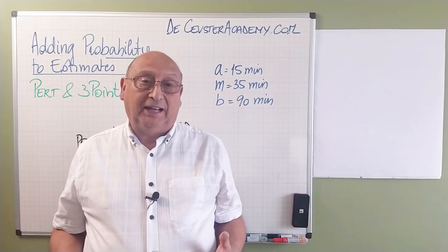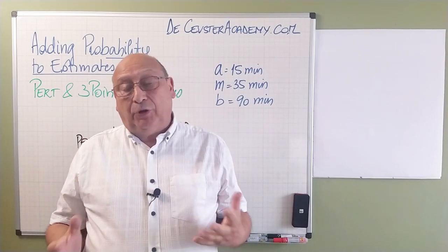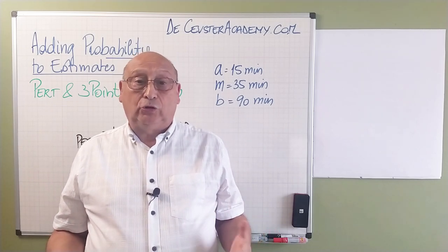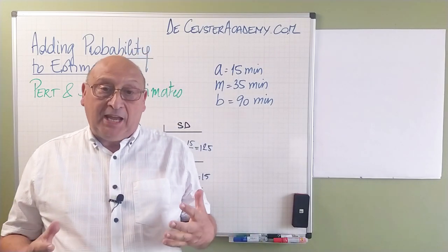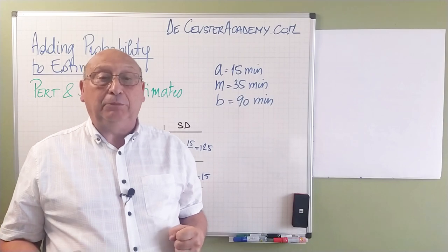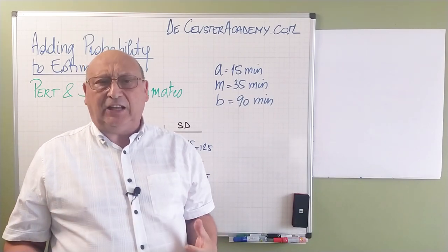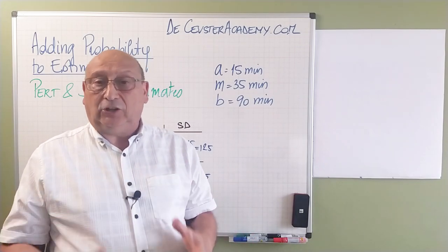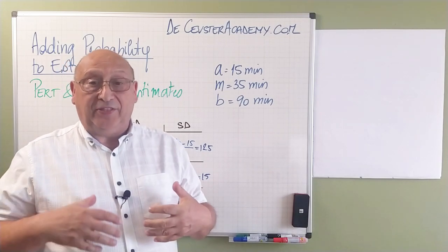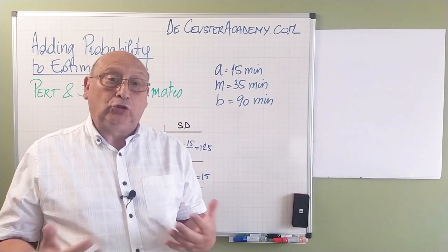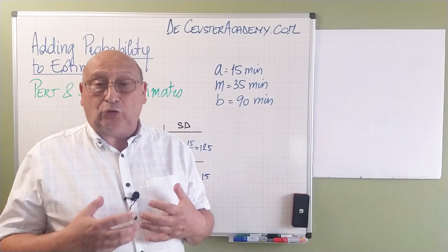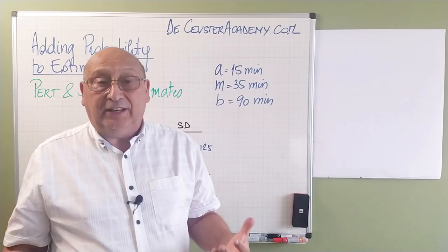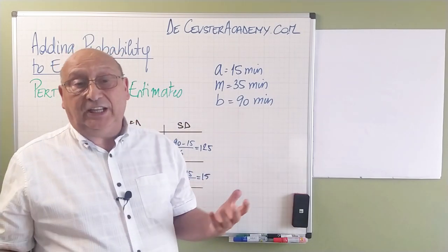Using the PERT and the three-point formulas is not difficult — they are simple calculations — but we have to determine the values A, M, and B. In our example, I've taken a trip of 15 minutes in the most ideal circumstances: everything works perfectly, no waiting time. The mode is 35 minutes, which from experience is typically the most frequent travel time from A to B. In the pessimistic case, due to natural variation, we arrive only after 90 minutes. These extreme values are only happening with very small probabilities.